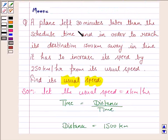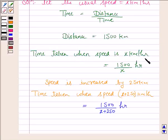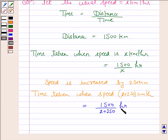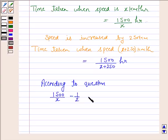Now, since we are given that the plane left half an hour later than its scheduled time, if the plane flies with speed x km per hour, then it would have reached the destination half an hour later. So with speed x km per hour, the plane would have taken half an hour more than the time taken when speed is x plus 250 km per hour. In order to equate these two, we subtract half an hour from the first time. According to the question: 1500 upon x minus half is equal to 1500 upon x plus 250.